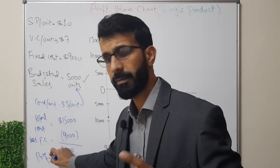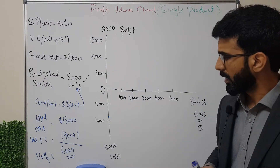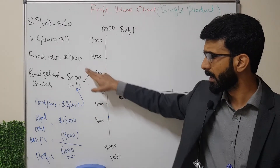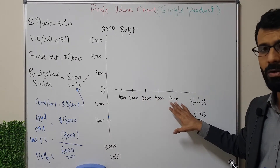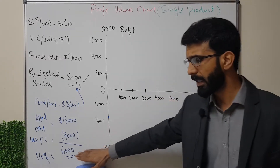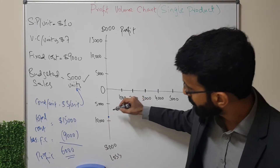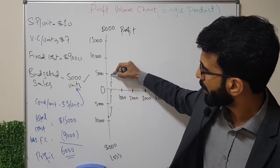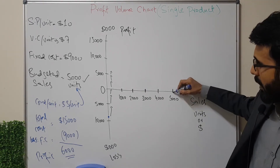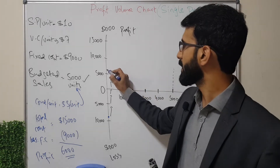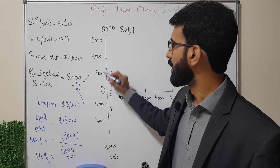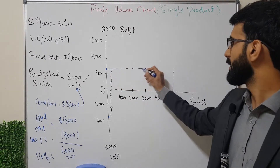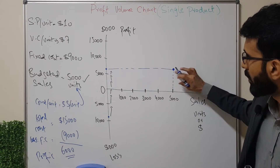That gives us a profit of $6,000. So if we sell zero units we stand at a loss of $9,000 equal to fixed cost, and if we sell all 5,000 expected units we end up at a profitability of $6,000, which is plotted on the upper portion of the graph.